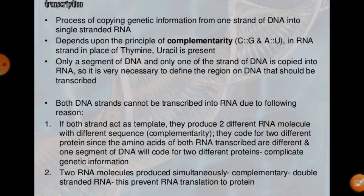But how does this process take place? The whole process of changing DNA into RNA is known as transcription. We can say it is the process of copying the genetic information from DNA into RNA. The DNA is double-stranded and it will form a single RNA strand. The different principles of complementarity govern the process of transcription.